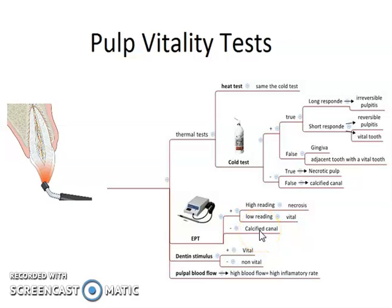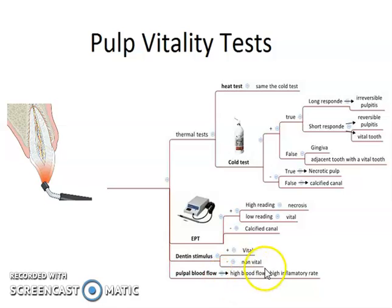In electric pulp testing, a higher reading indicates necrosis and a low reading indicates vital pulp. A negative response can occur in the case of a calcified canal. Dentinal stimulus testing: positive means vital, negative means non-vital. The highly accurate test is pulp blood flow — if there is high blood flow, it indicates a high inflammatory rate, meaning pulpitis is present.